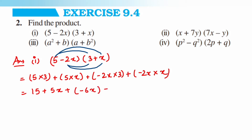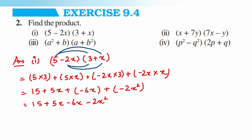So this is equal to 15 plus 5x minus 6x minus 2x squared. Here 5x and minus 6x are like terms, so 5 minus 6 is minus 1, giving minus x. The final answer for the first question is: 15 minus x minus 2x squared.